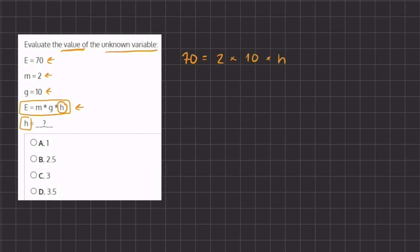Now let's simplify. So we have 70 equals 2 times 10 which is 20, and we have this h, so we have 20h. And now in order to find the value of h we want to isolate it.